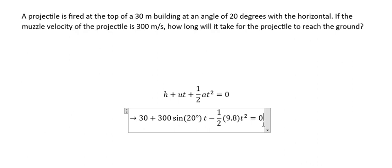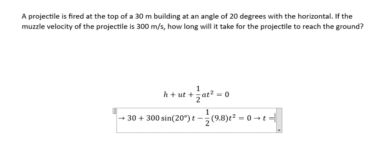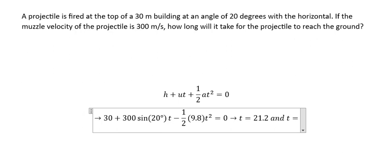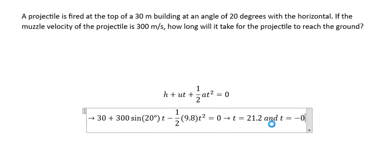After you put all the numbers in, you can use the calculator to find the value of t. You get t equals 21.2 and t equals negative 0.3.